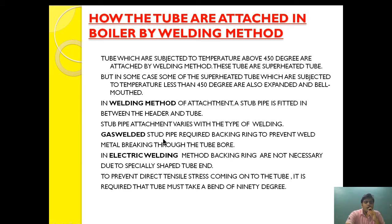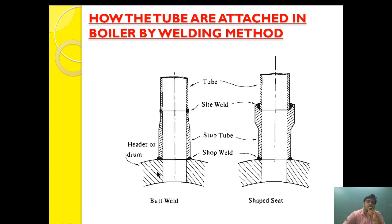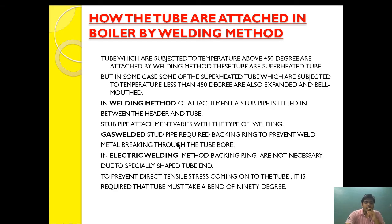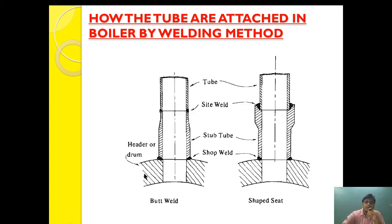Gas weld stub pipes require a backing ring to prevent weld material from breaking through the tube bore. In the case of electric welding, backing rings are not necessary due to the specially shaped tube end. As you can see in this diagram, the gas welding stub pipe has a backing ring, whereas the electric welding stub pipe does not require one.